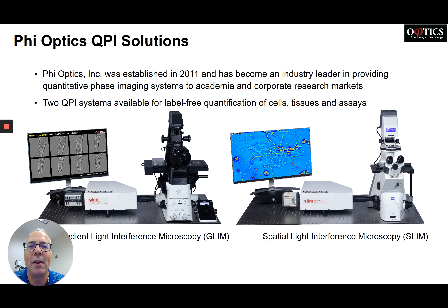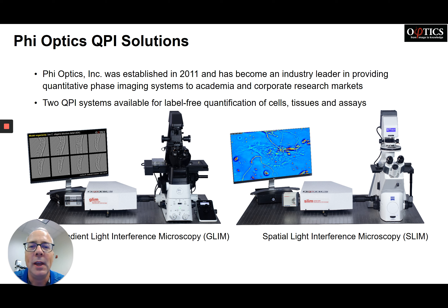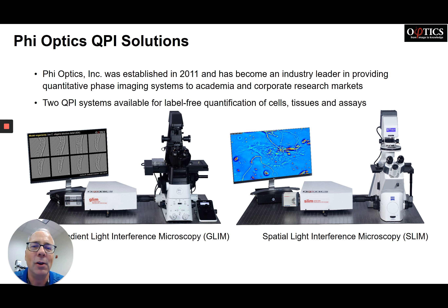What you're looking at on the left is gradient light interference microscopy, suitable for spheroids, embryos, and larger thicker tissues. On the right we have spatial light interference microscopy — our original flagship product — and it's more for monolayer or subcellular detail.